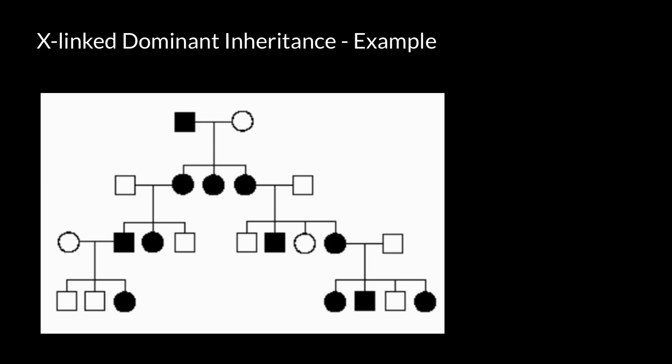Imagine that this affected person, this male, has one defective X chromosome. Of course, not the whole chromosome carries defective genes, but only one gene that specifies this genetic disorder would be defective, and the other sex chromosome would be the Y chromosome. I'm using green color to designate that this is a normal chromosome.